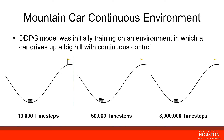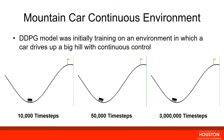The first environment we'll look at is the mountain car continuous environment, where a cart attempts to climb a hill but doesn't have enough power to directly climb it, so it needs to learn how to build momentum and then use what power it has to reach the goal. With DDPG, at 10,000 steps it just rocks back and forth, at 50,000 it picks up more, and by 3 million time steps the cart is able to reach just enough momentum to reach the goal.